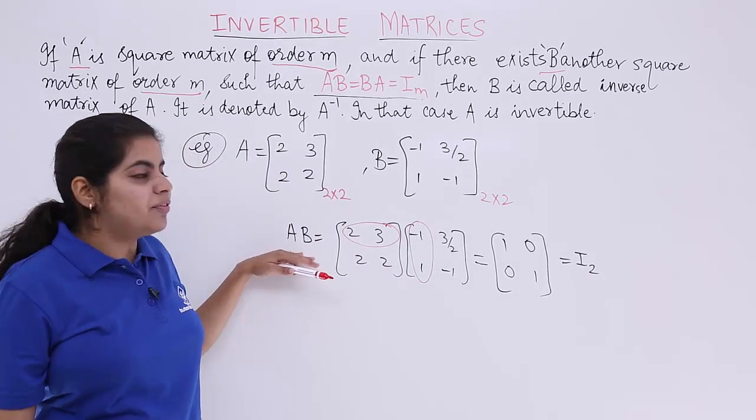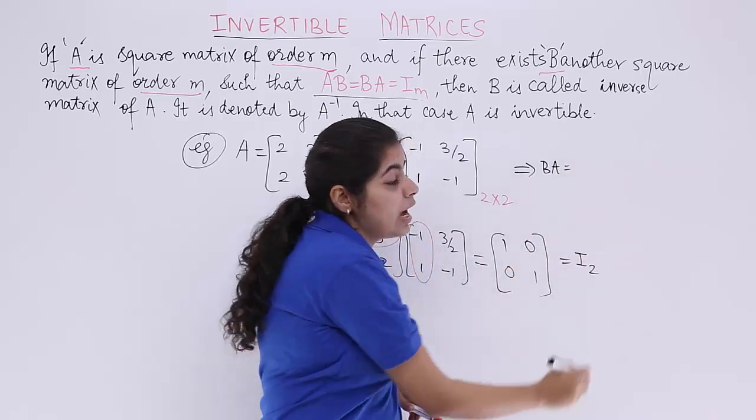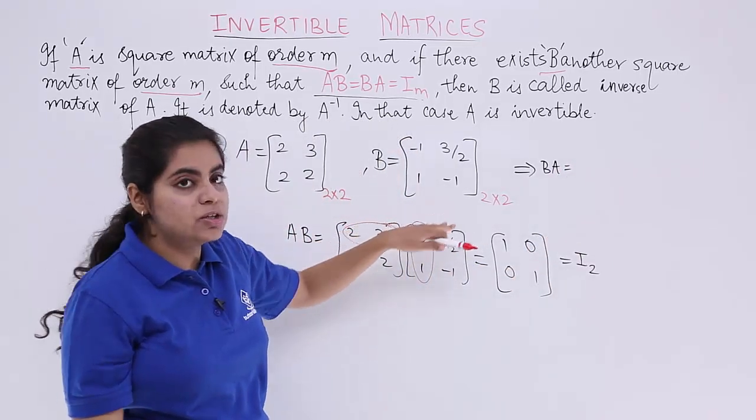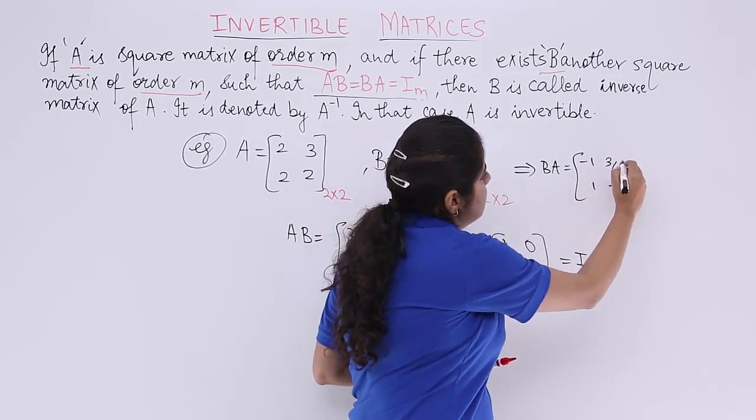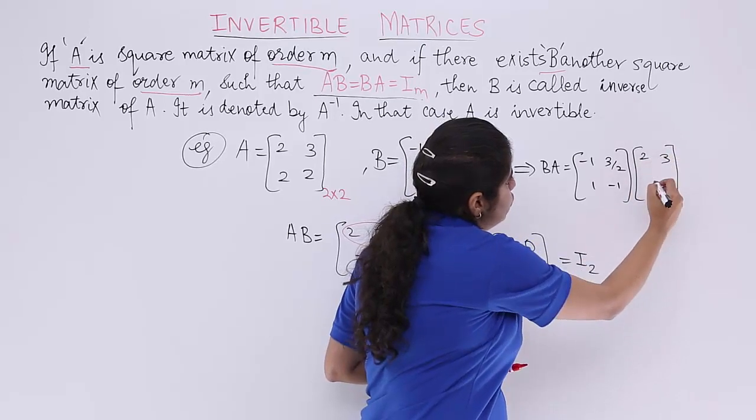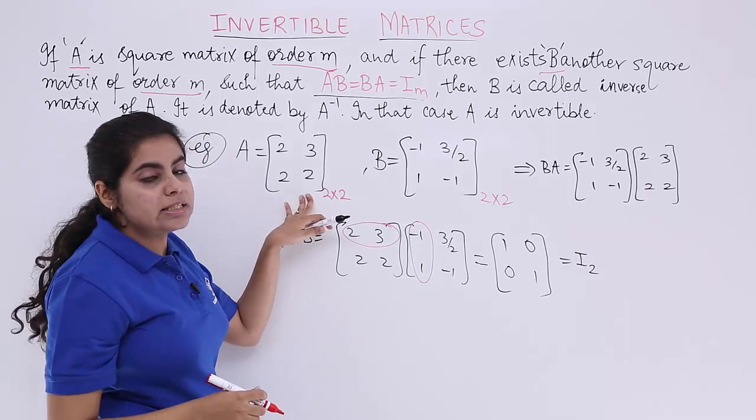If you find BA and you see that AB is equal to BA, definitely you have it equal to 1, 0, 0, 1 identity matrix and then the matrices are invertible. So after finding AB, my task is to find the next thing which is BA. How to find BA? First write B then A. B is minus 1, 3 by 2, 1, minus 1, multiply by the A matrix which is 2, 3, 2, 2.